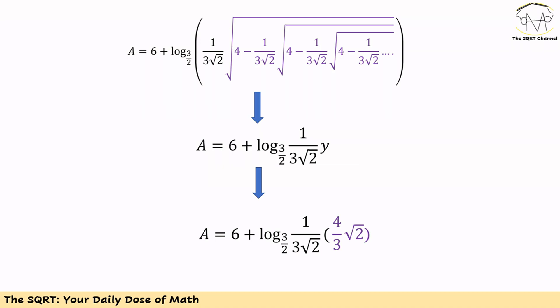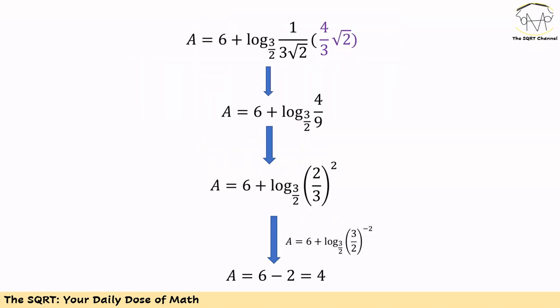Now we are going to simplify the initial expression that we had. Let's use A for the whole expression. We can say A equals 6 plus log of Y over 3 times square root of 2 in base 3 over 2. Then we are going to replace the value that we found for Y. Remember, we found Y to be 4 times square root of 2 over 3.